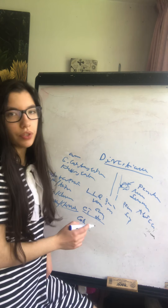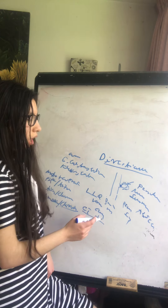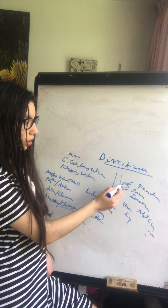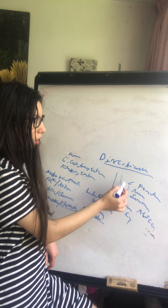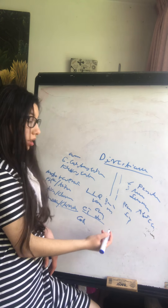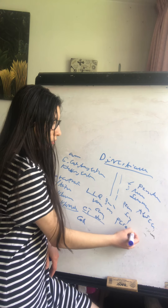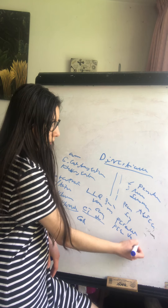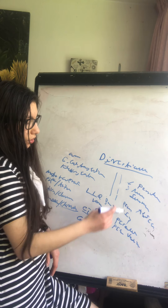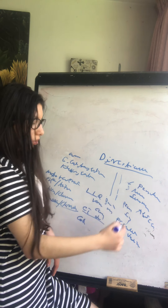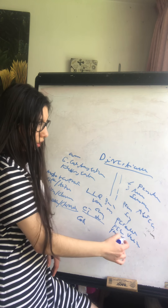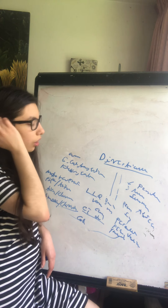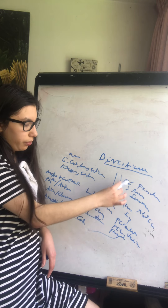Complications include fistula formation — for example, between the colon and the bladder (vejiga). When the diverticula ruptures, a fistula can form, so the patient would have fecaluria, or fecal discharge from the bladder, or air in the urine — pneumaturia. The fistula is a complication of this rupture of the diverticula.